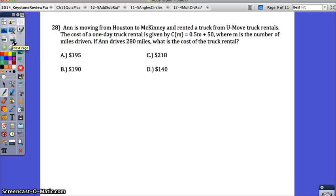Another word problem. You're going to have a lot of word problems to practice here. Ann is moving from Houston to McKinney and rented a truck from U-Move truck rentals. The cost of a one-day truck rental is given by the cost of M equals 0.5M plus 50, where M is the number of miles driven. This is a function notation. It's saying the cost of miles. It's not being multiplied. Remember that this is just your independent variable. The cost depends on the miles.